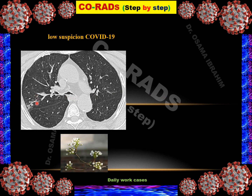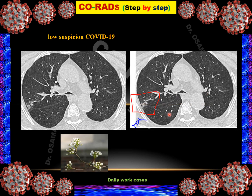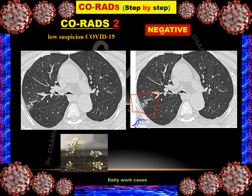Case 3: Presence of tree-in-bud appearance, which looks like a tree in bud picture and represents terminal airways abnormality. The presence of tree-in-bud represents CO-RADS 2, meaning low suspicion of COVID-19. RT-PCR test for this patient was negative.